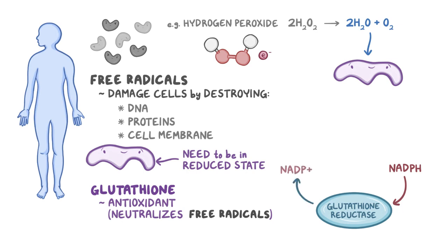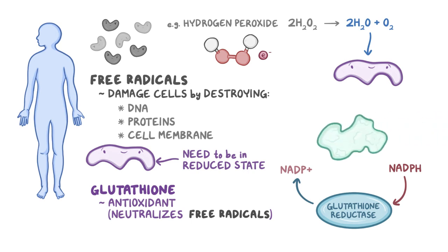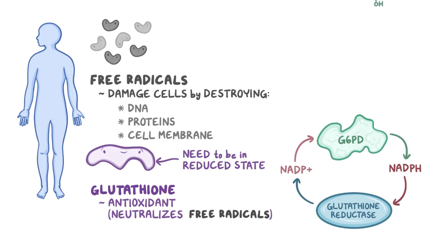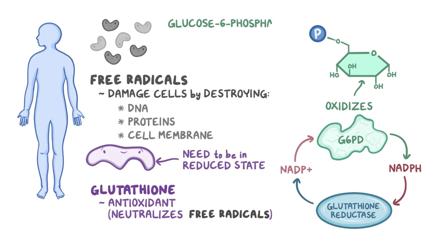To replenish the supply of NADPH, we have the glucose-6-phosphate dehydrogenase enzyme, or G6PD, which reduces NADP+ back to NADPH by oxidizing a glucose-6-phosphate. Glucose-6-phosphate is a metabolite of glucose, so we usually have a ready supply of this molecule, as long as we're not starving.